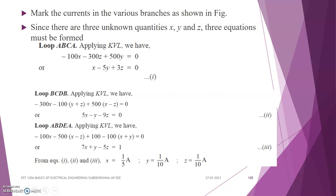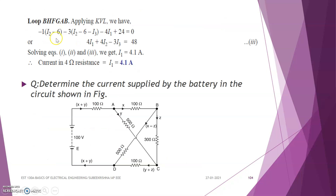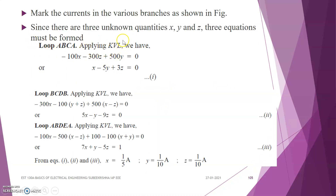For the first loop ABCA, we write the KVL equation. By applying KVL we get: minus 100x minus 300z plus 500y is equal to 0. On simplifying and rearranging, we get the final equation: x minus 5y plus 3z is equal to 0. Mark it as equation number 1.